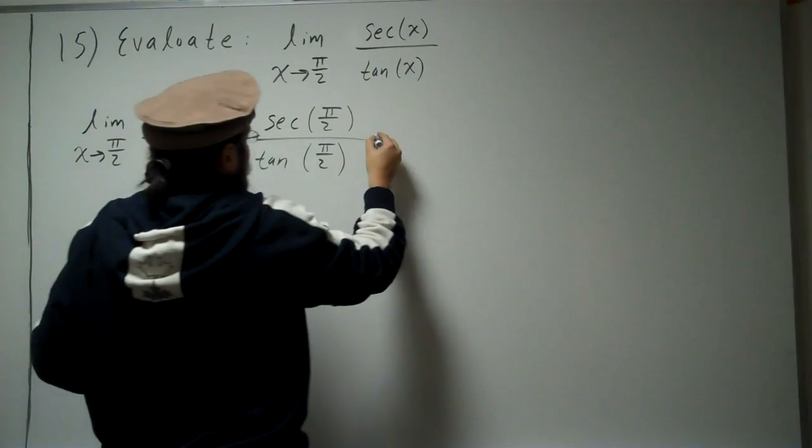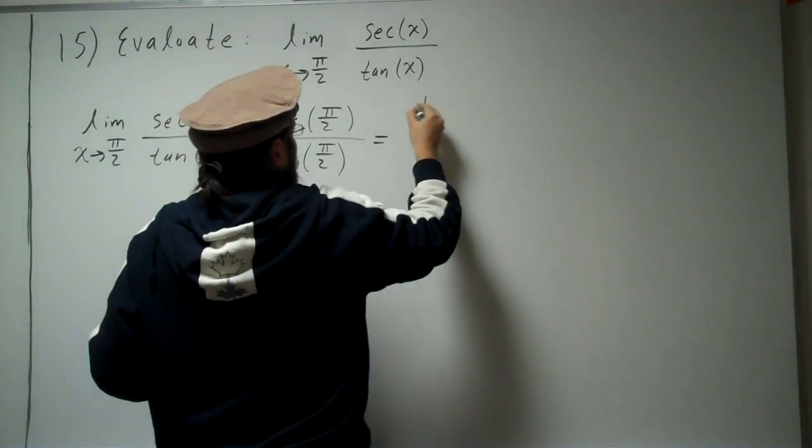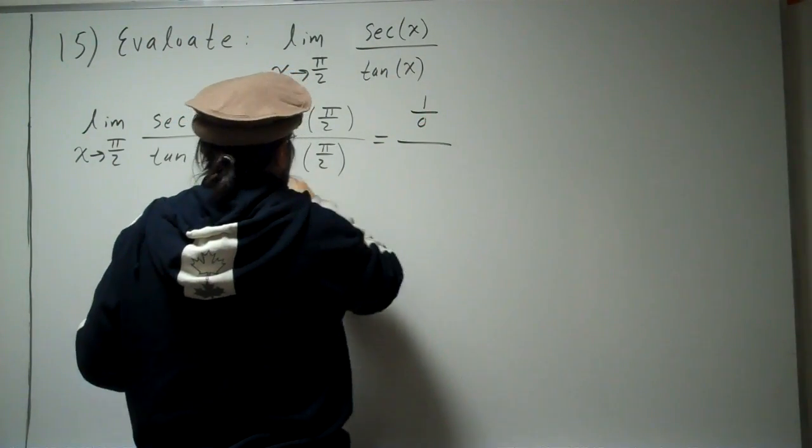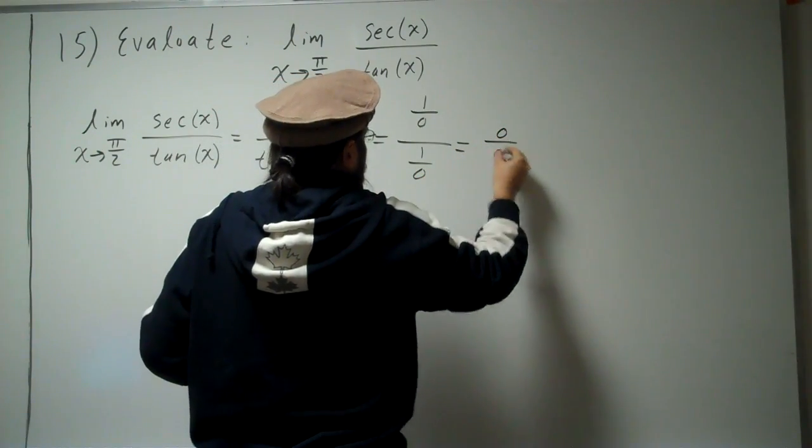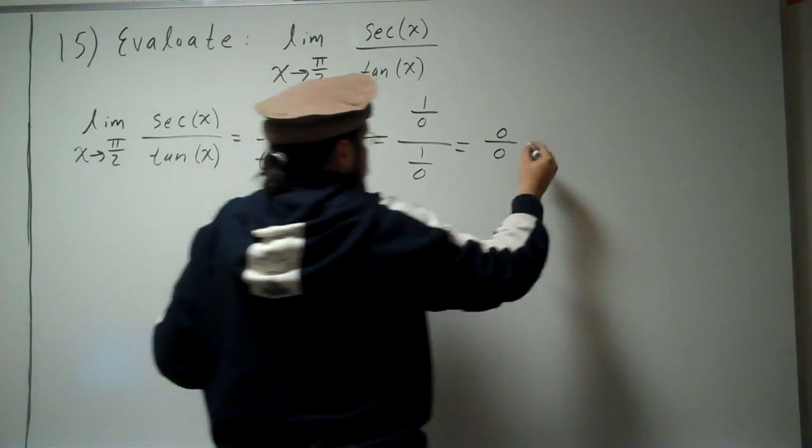Okay, but secant of pi over 2 is 1 over 0, and tangent of pi over 2 is also 1 over 0. So what do we get? We get 0 over 0, and that is undefined.